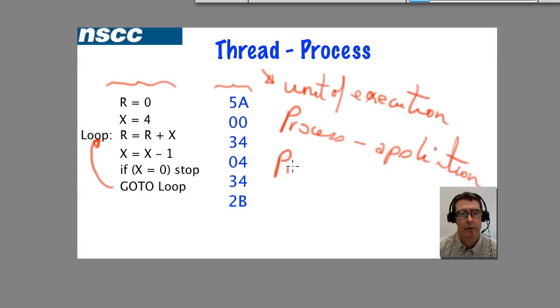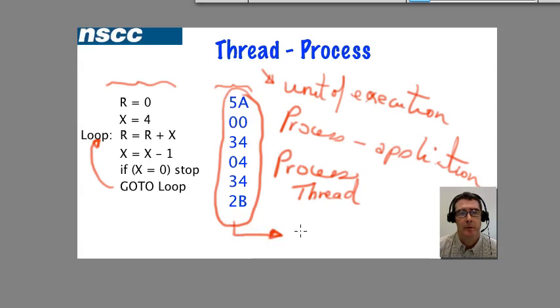Now, a process has to have at least one thread. That is something doing something. So the idea of a thread is just a unit of execution, a series of numbers that the CPU can access and execute. A process is an application. Processes are today generally multi-threaded, that they have multiple threads. But a process only needs to have one thread.